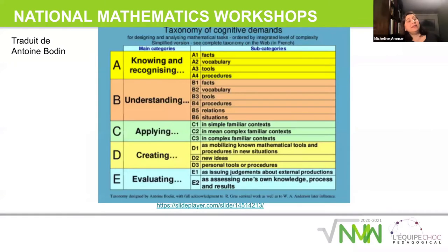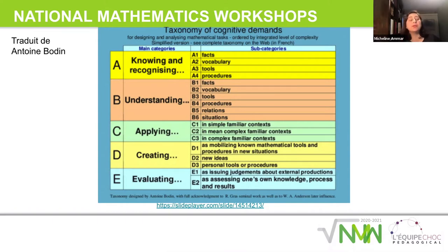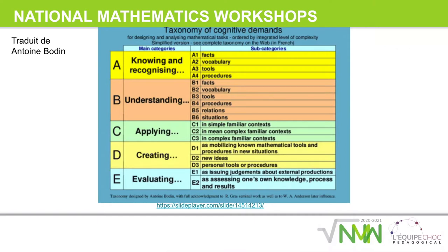There's a study in France — Dr. Antoine Baudet took the taxonomy and reformatted it in a way that would be more useful for teachers. He classified and regrouped all these metacognitive levels into groups, which is how the competencies C1, C2, C3 came about. For example: knowing and recognition, understanding, applying, creating, and evaluating. When you start looking at D and E, you're talking about higher cognitive, metacognitive competencies.